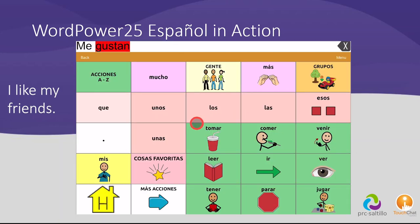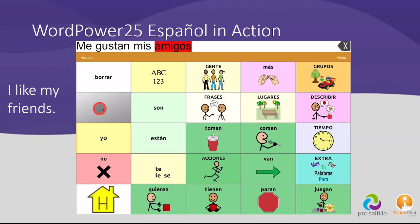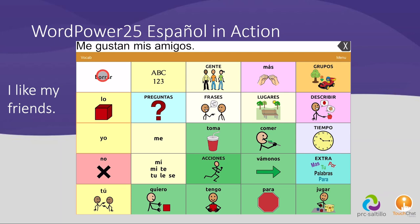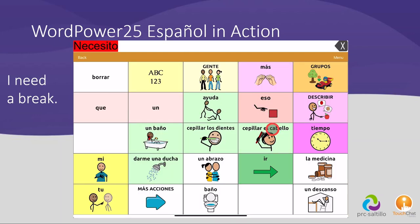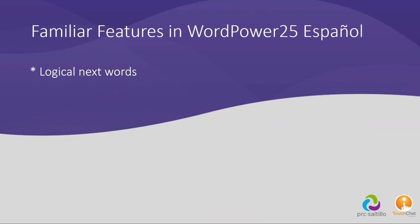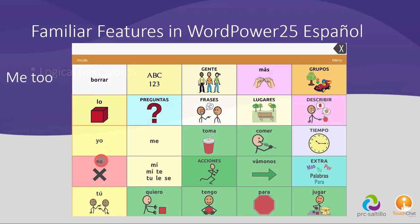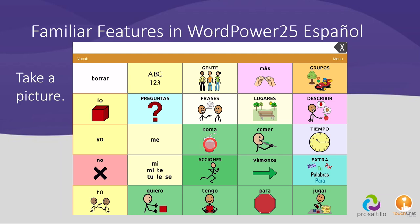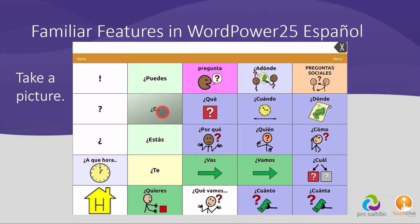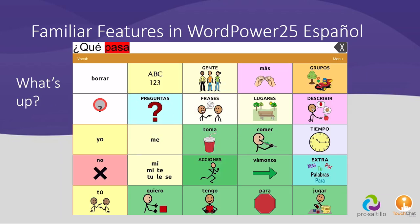Me gustan mis amigos. Necesito un descanso. Other familiar features include logical next words. For example: Yo — también — toma — una foto — toma una foto. ¿Qué? — pasa — ¿qué pasa?